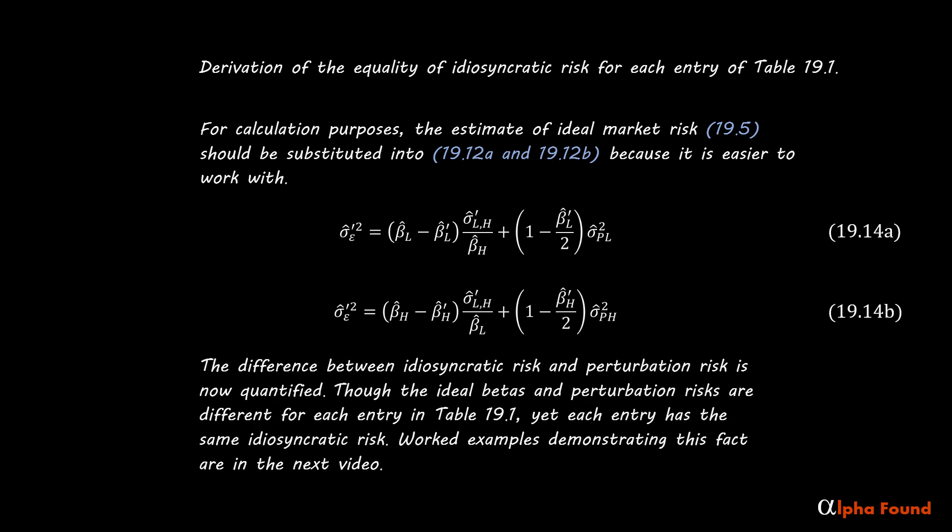The difference between idiosyncratic risk and perturbation risk is now quantified. Though the ideal betas and perturbation risks are different for each entry in Table 19.1, yet each entry has the same idiosyncratic risk. Worked examples demonstrating this fact are in the next video.